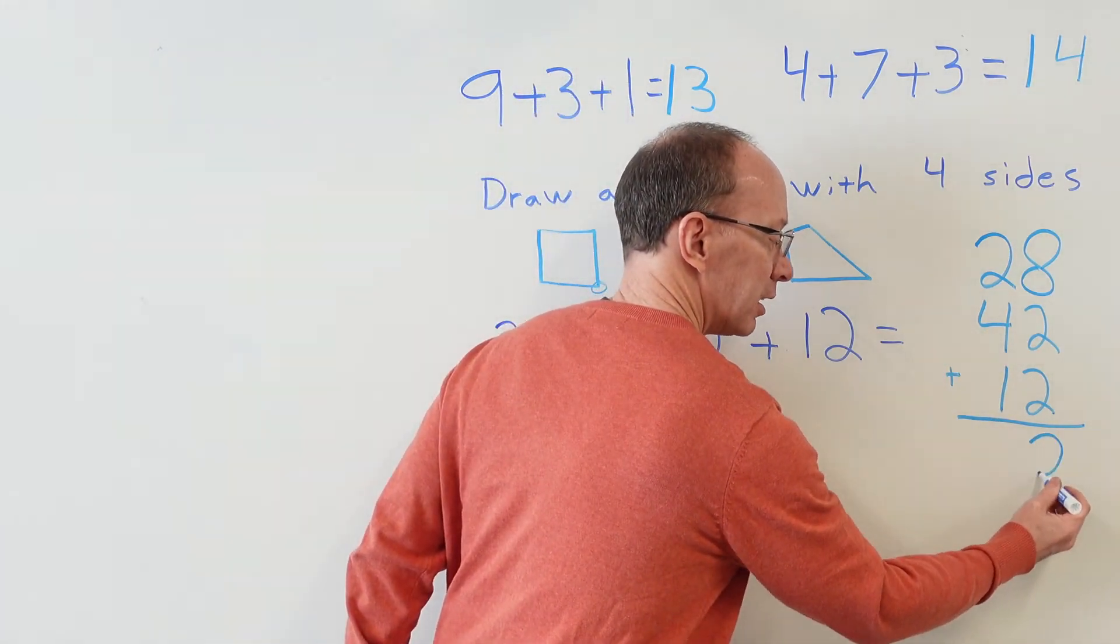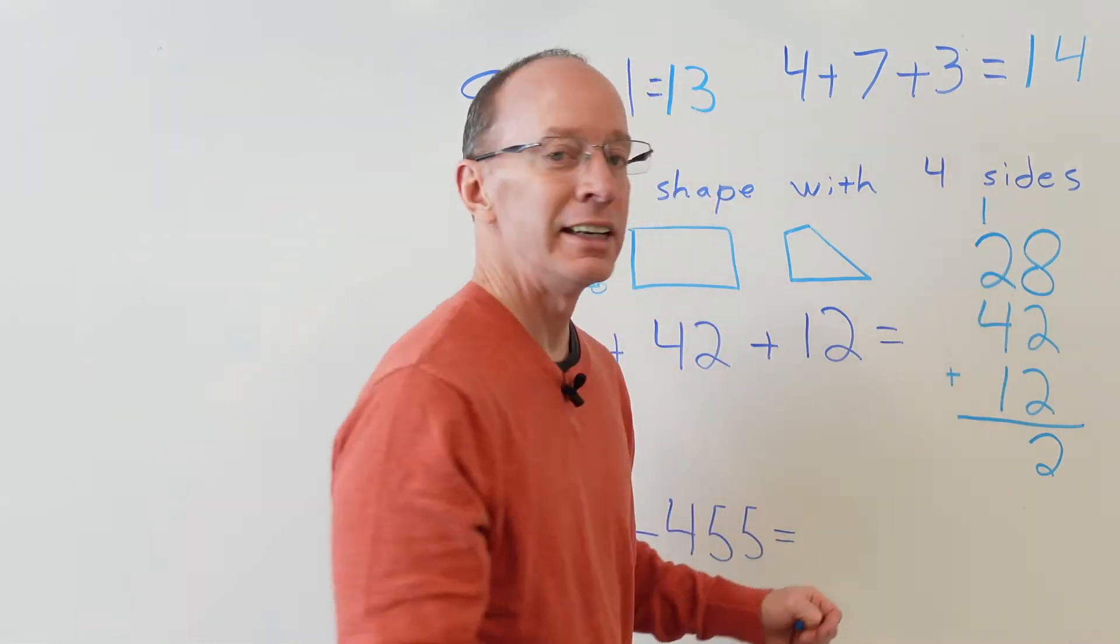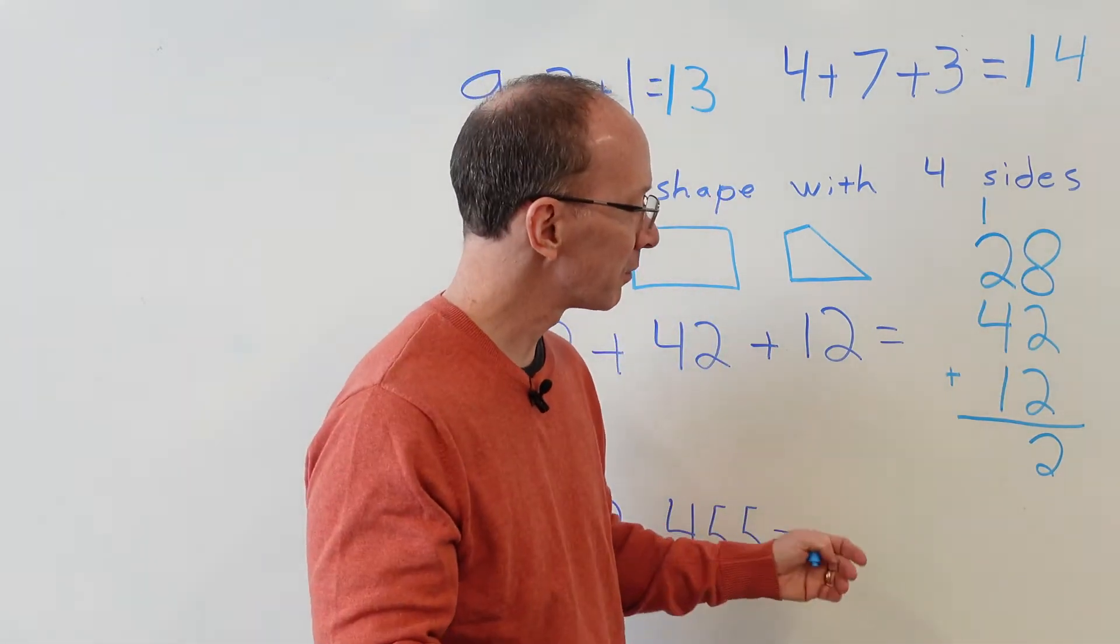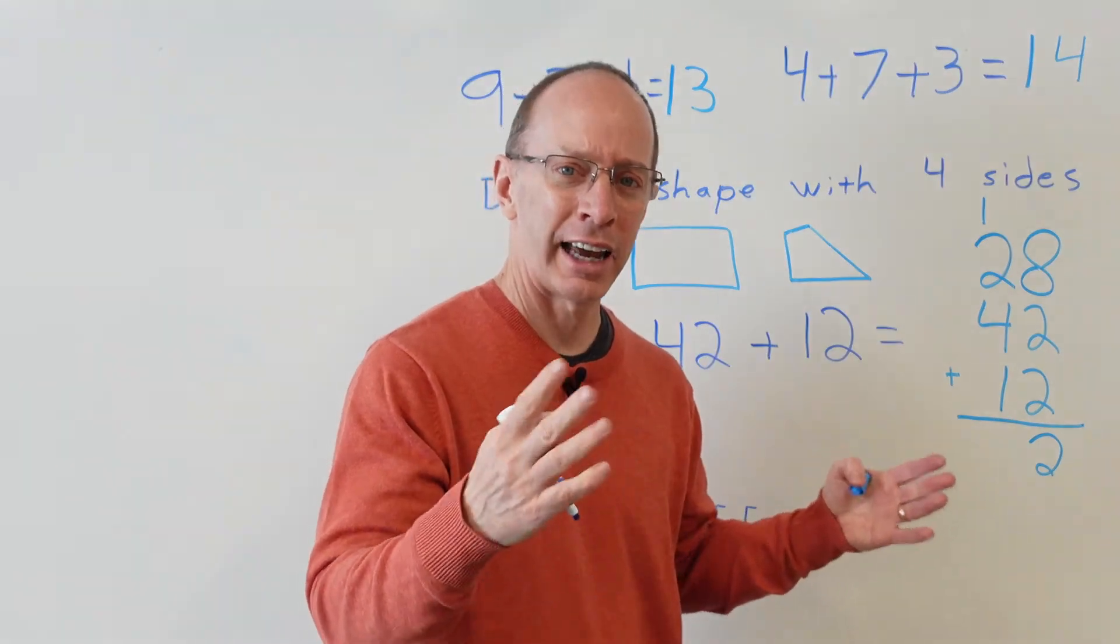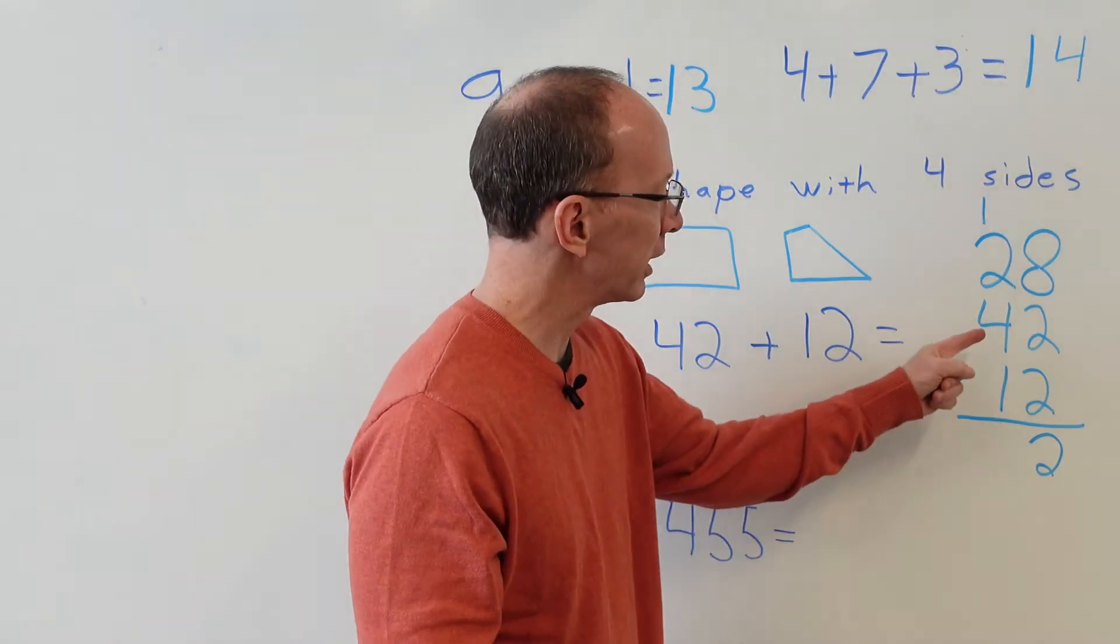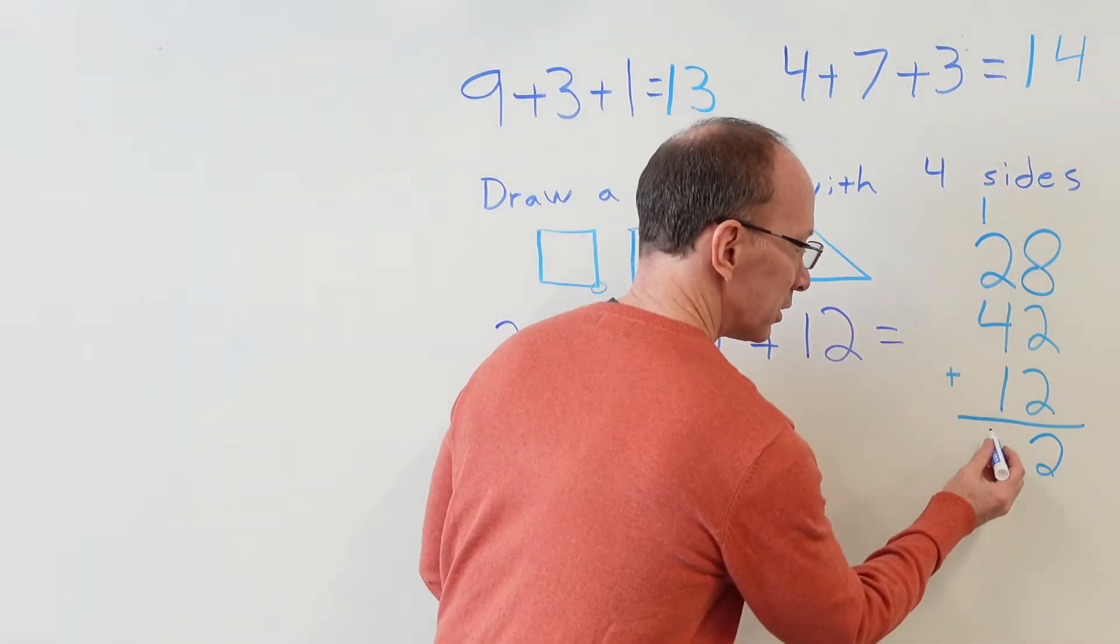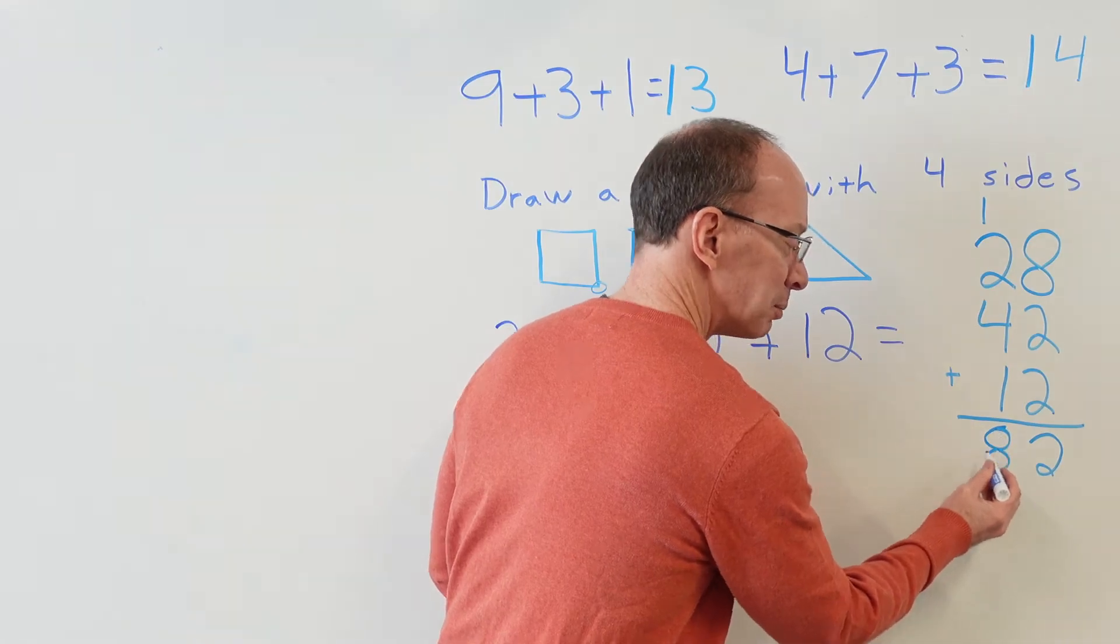Remember we put the 2 right here, carry the 1 on top of there. Now we add the tens. So I always like to, sometimes I like to add the biggest number first. Everybody's a little different. So I like to go four, five, six, seven, eight. Put the 8 right here. Don't be late, Mr. Eight!